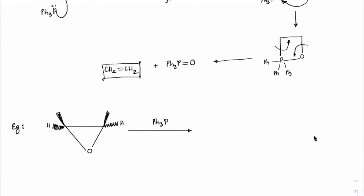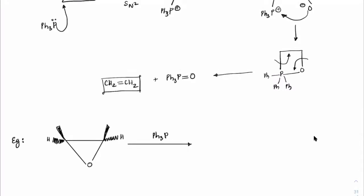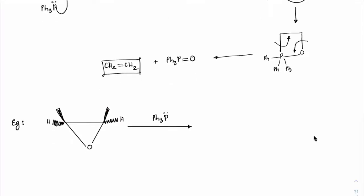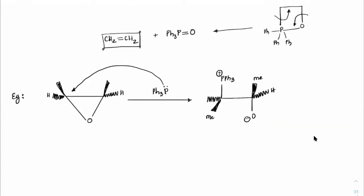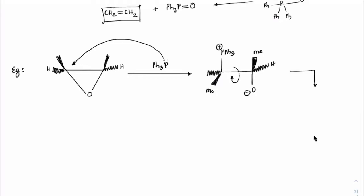For another epoxide example with Ph₃P: attack can happen from any direction. Let's say Ph₃P attacks here — we have P⁺Ph₃ and O⁻ on one side, with methyl and hydrogen in their respective positions. This describes the intermediate after ring opening.